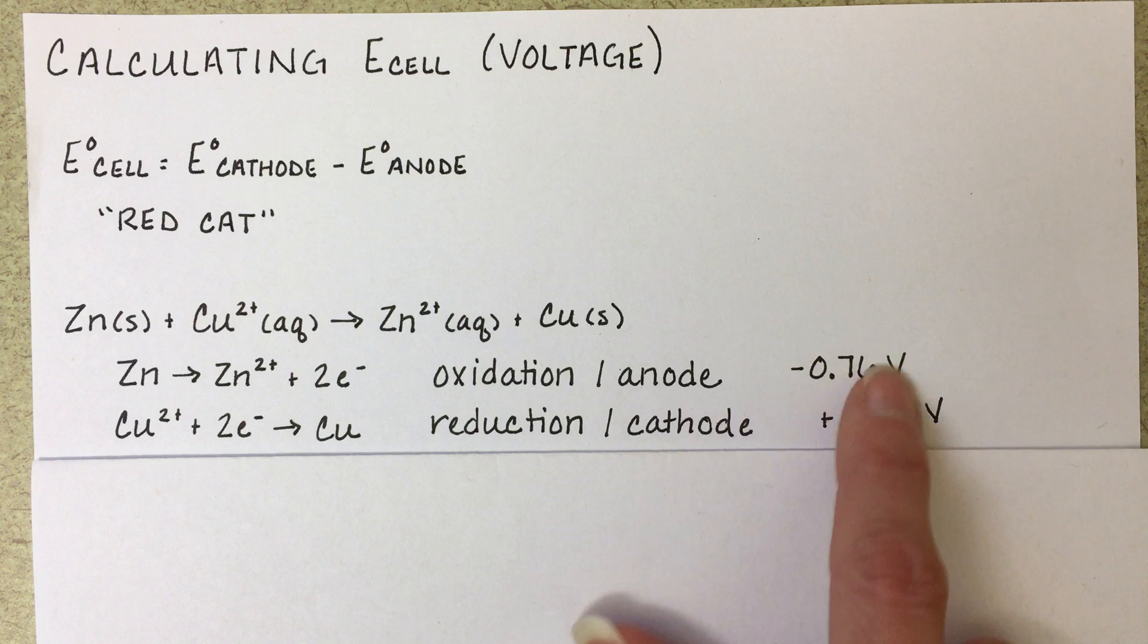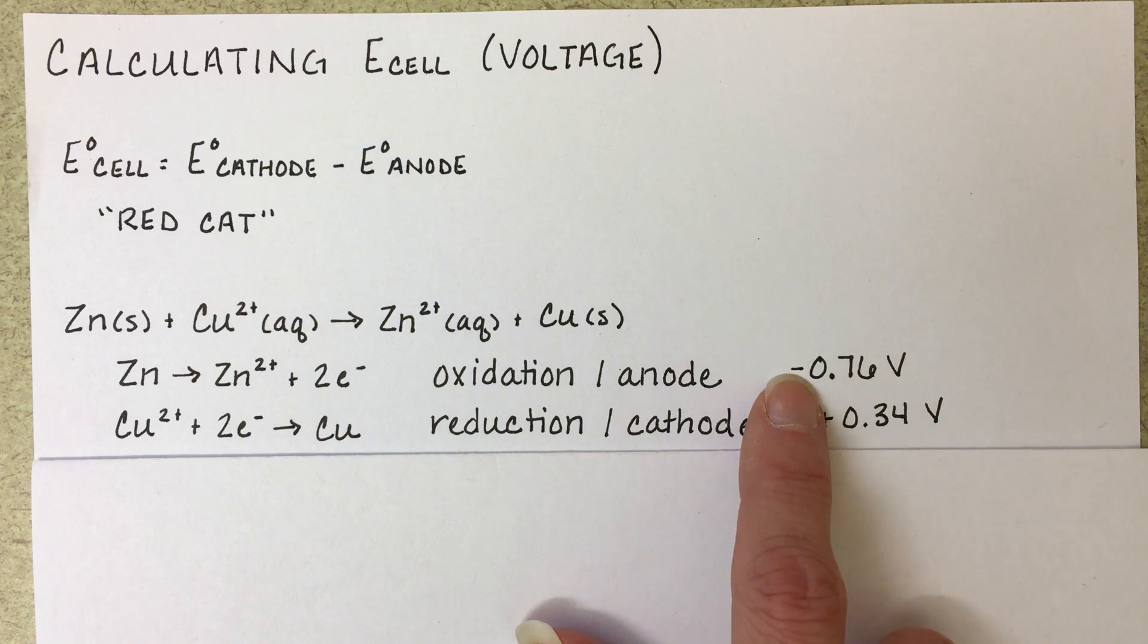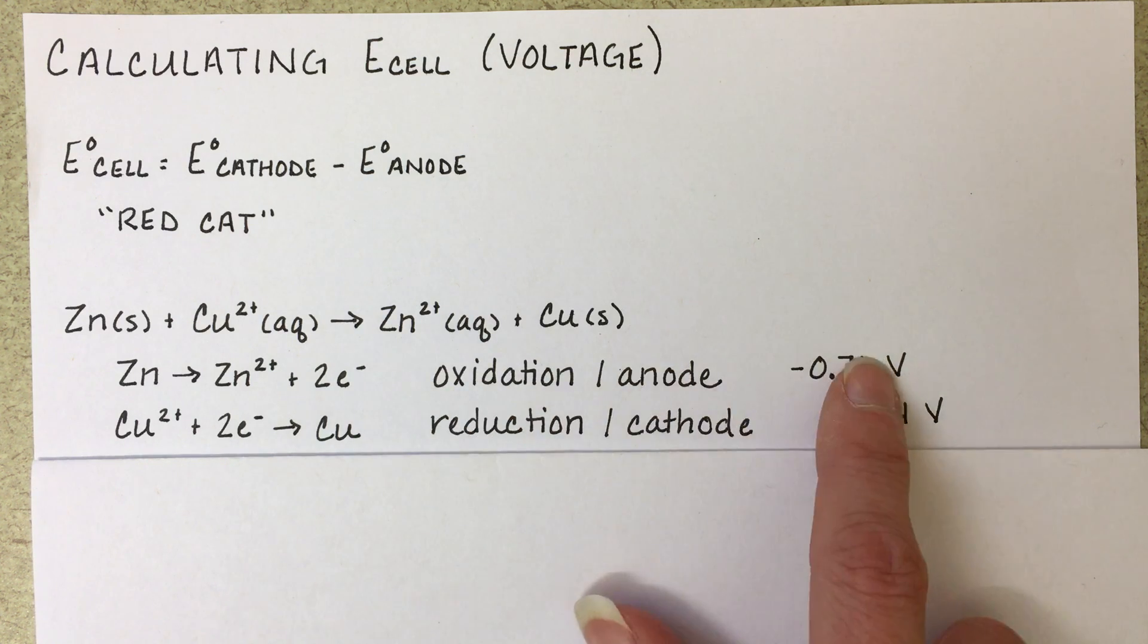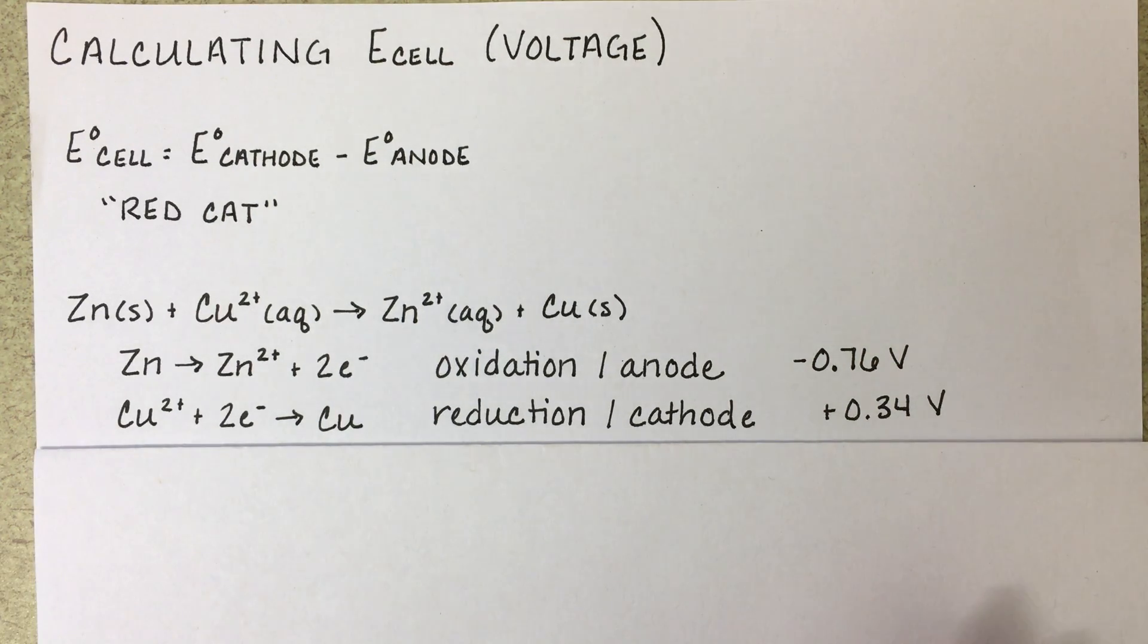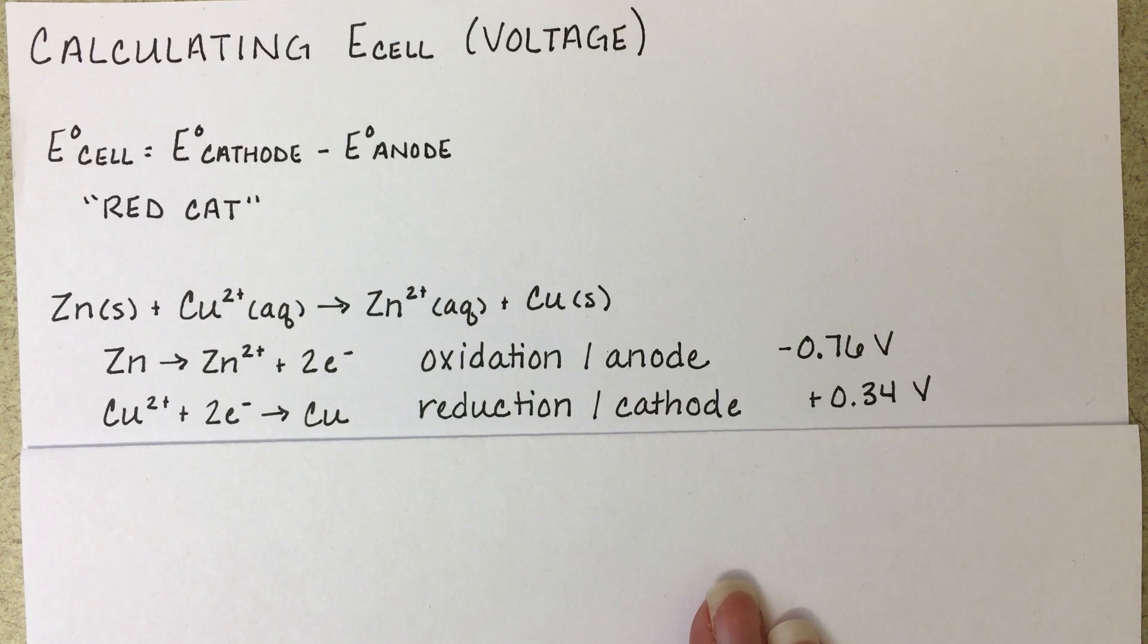Because in our equation, this little negative sign is built into the equation to change the value of the oxidation half reaction so that it is correctly reflected and calculated in the equation. If that doesn't make any sense to you, that's okay. We'll go over that more in class.